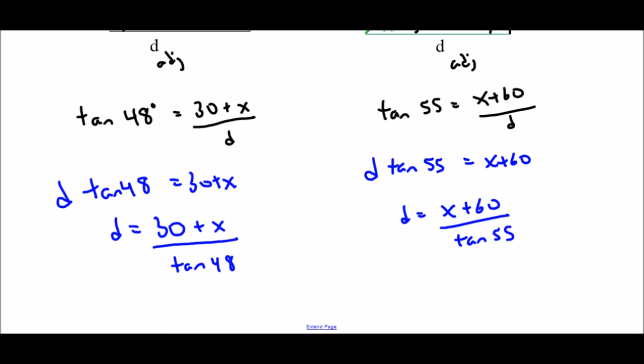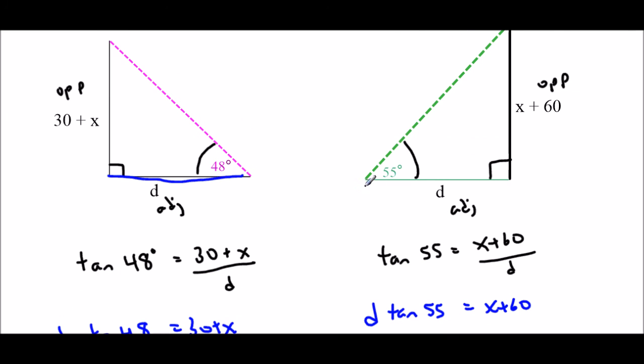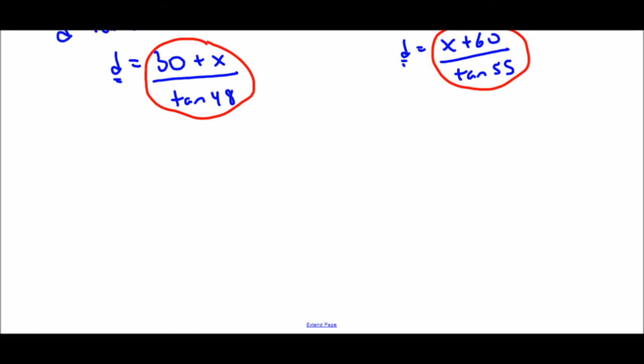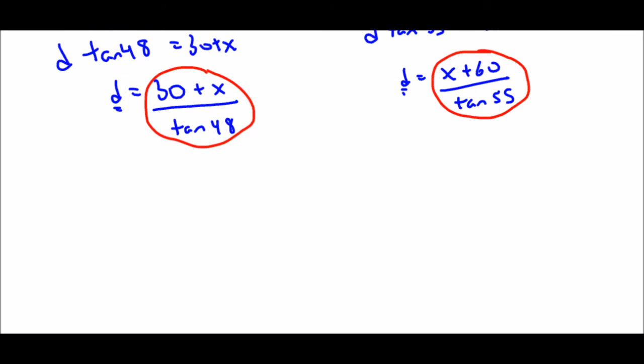So what I have is two equations where I know what d is equal to. And of course, d is the distance between the towers, which is one answer, which means that this d must equal this d. And therefore, this version of d must equal this version of d. So we substitute those two d's for each other. And I get that 30 plus x over tan 48 is equal to x plus 60 over tan 55. And then I just have to solve for x because I'm down to a single equation with just unknown being x.